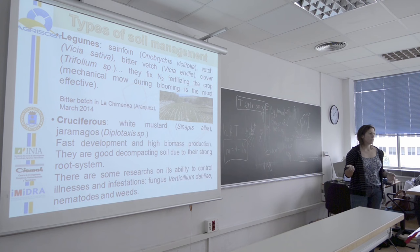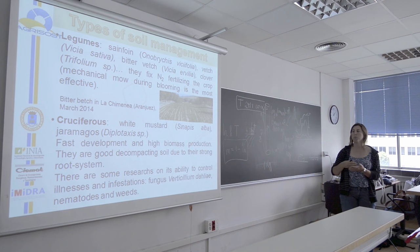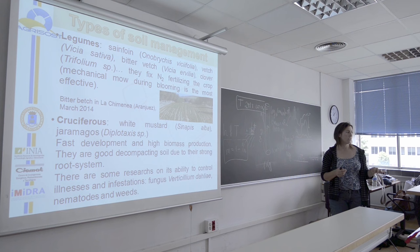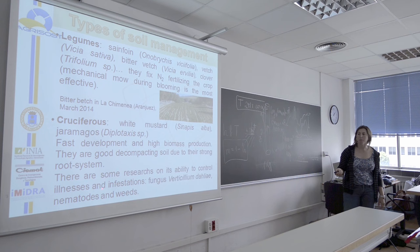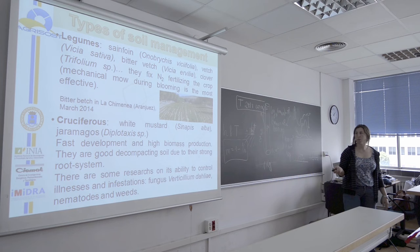Another very interesting group is cruciferous plants, because they have fast development and high biomass production. They also have a strong root system, good for decompacting the soil. Some studies show that with Sinapis alba, the white mustard, when this plant is cut at blooming it releases compounds called glucosinolates that fight against some fungi, nematodes, and other weeds, controlling populations. Verticillium dahliae is a problem all over Spain, and this is a possible treatment that farmers can use.